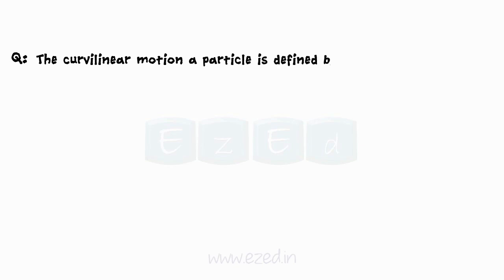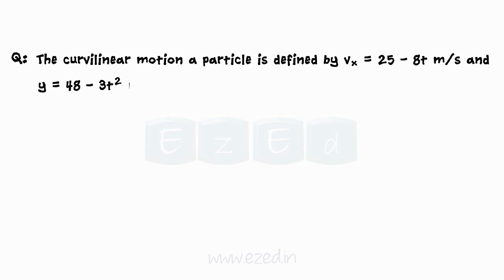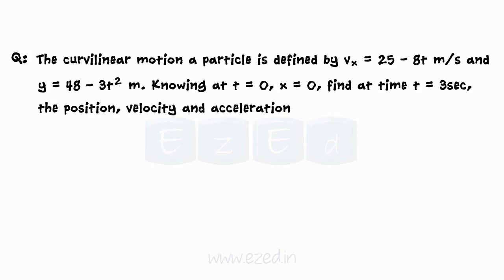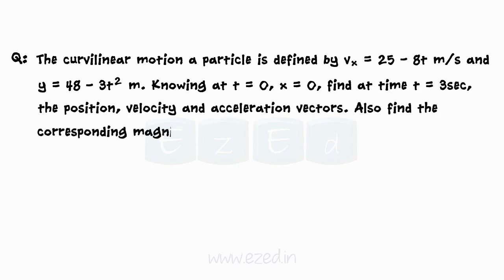In another curvilinear motion problem, a particle is defined by Vx equals 25 minus 8t meters per second and y equals 48 minus 3t squared meters. Knowing that at t equals 0, x equals 0, find at time t equals 3 seconds the position, velocity and acceleration vectors. Also find the corresponding magnitudes.